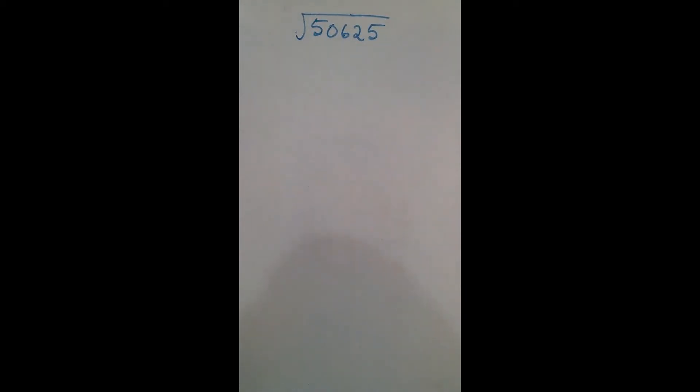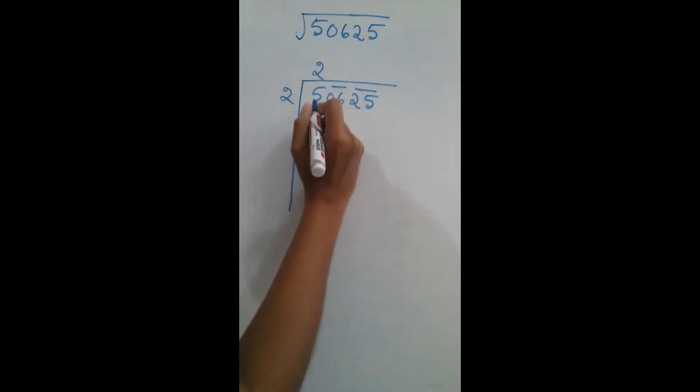Now we will find the square root for this number. I will group 50,625. These two groups, these two groups, this is only one number. 2, 2 squared is 4. Now I am subtracting 5 minus 4 is 1.